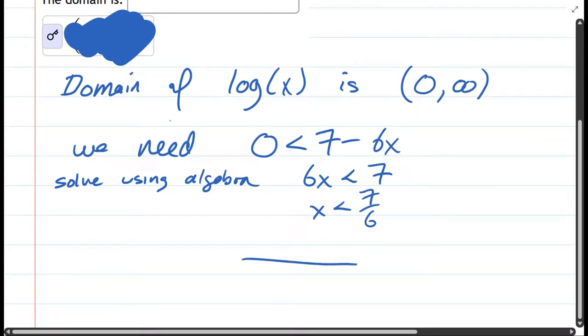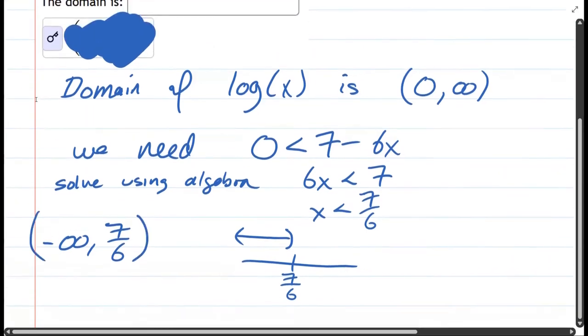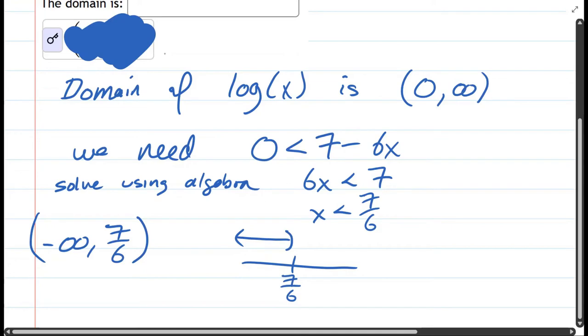And if you draw a number line, we're not allowed to equal seven-sixths. We want to take everything less than seven-sixths. So our answer will be the interval negative infinity comma seven-sixths. And we have to leave it open at seven-sixths because we don't include it, because that came from the fact that we were not allowed to equal zero.